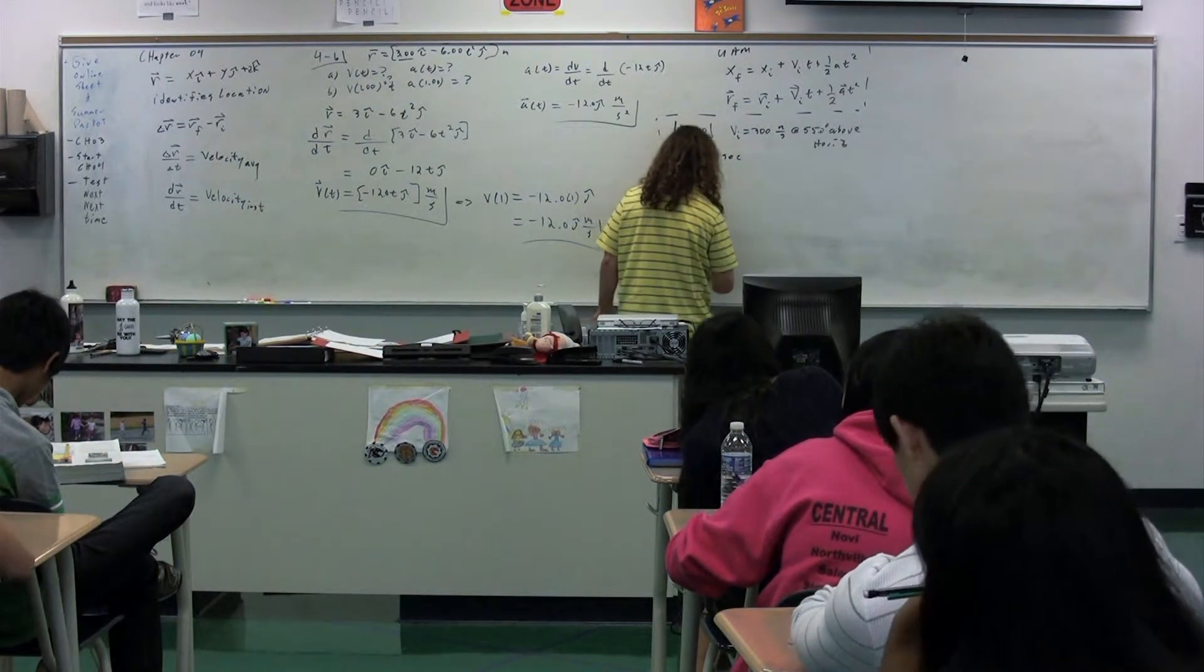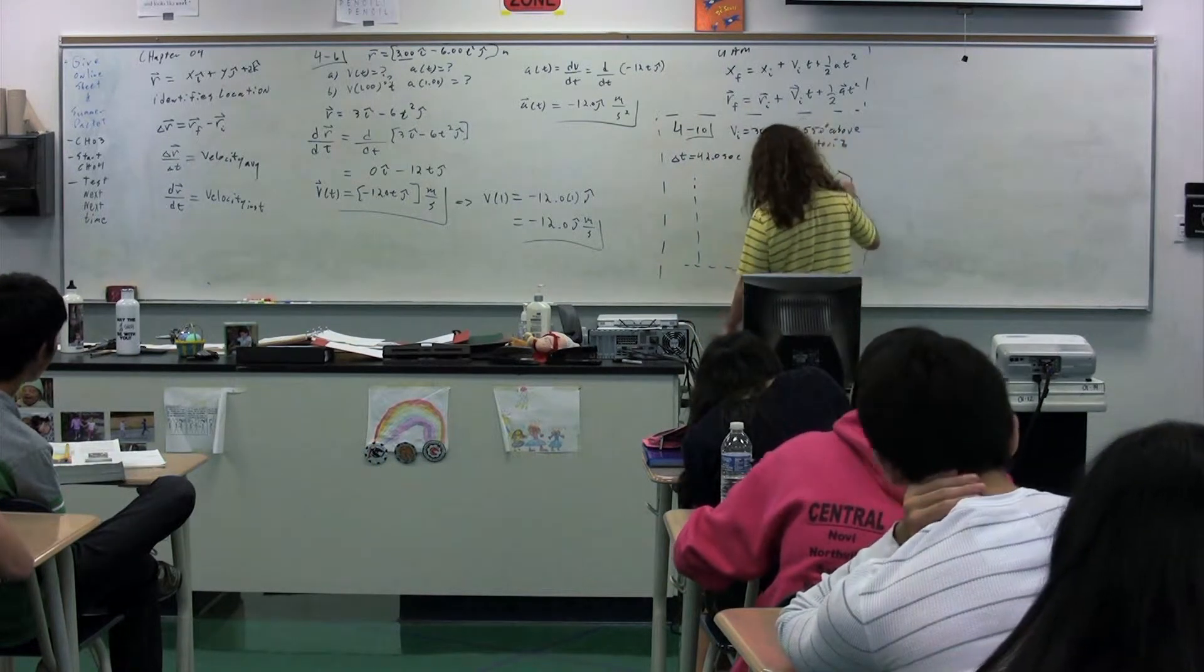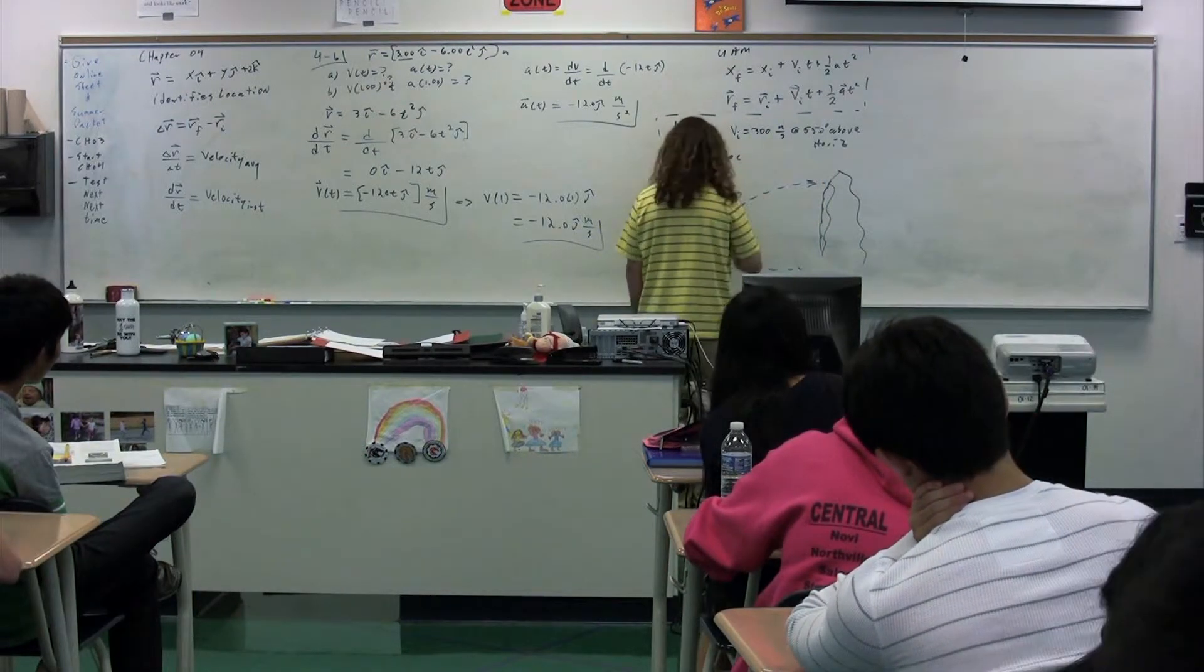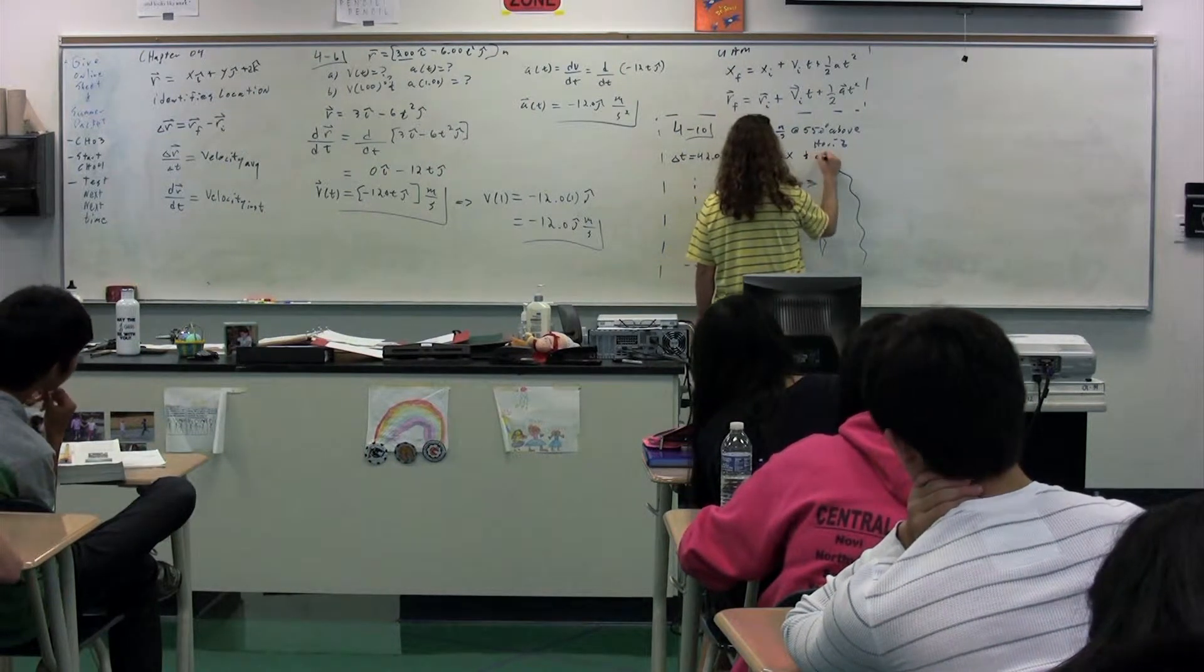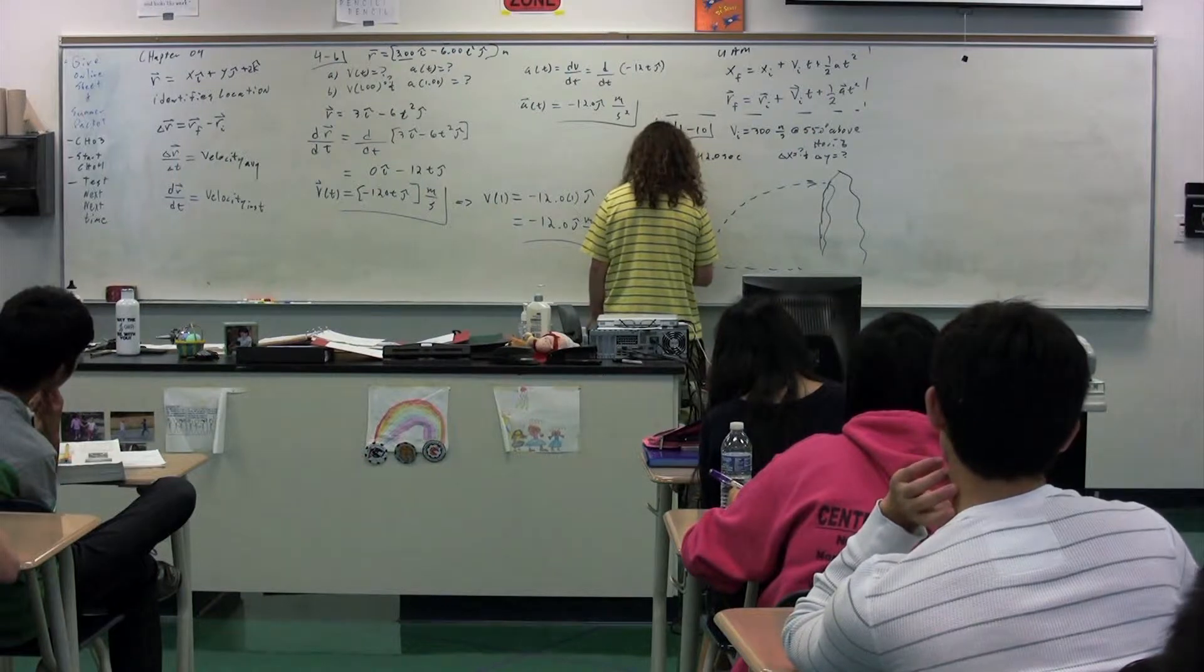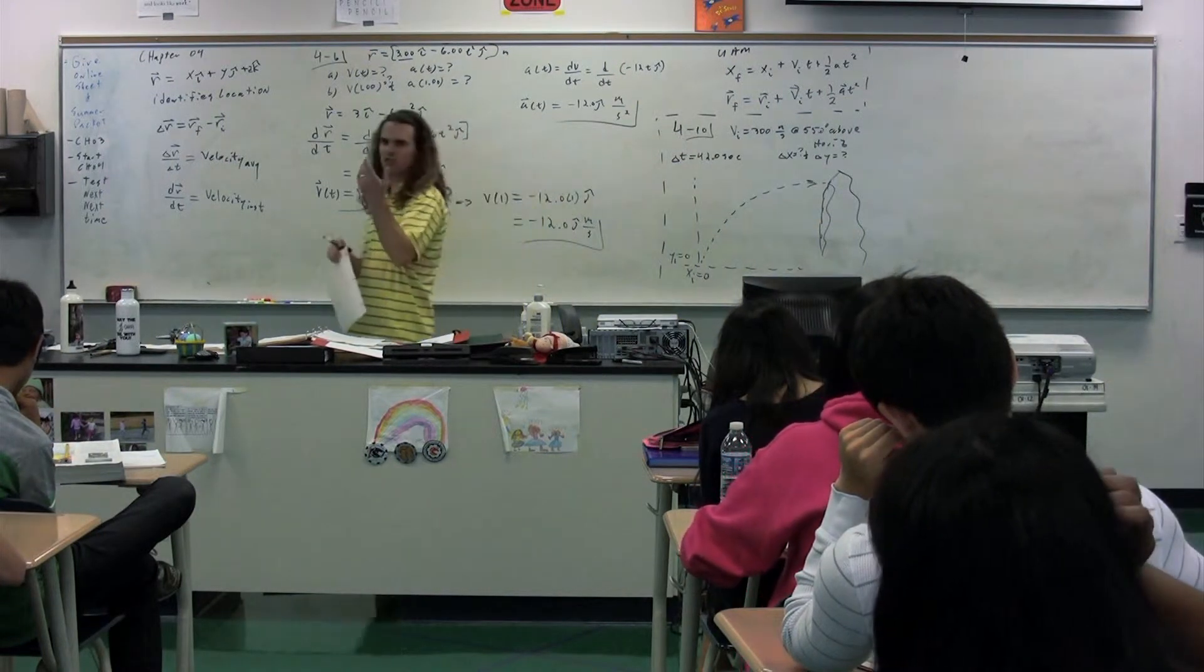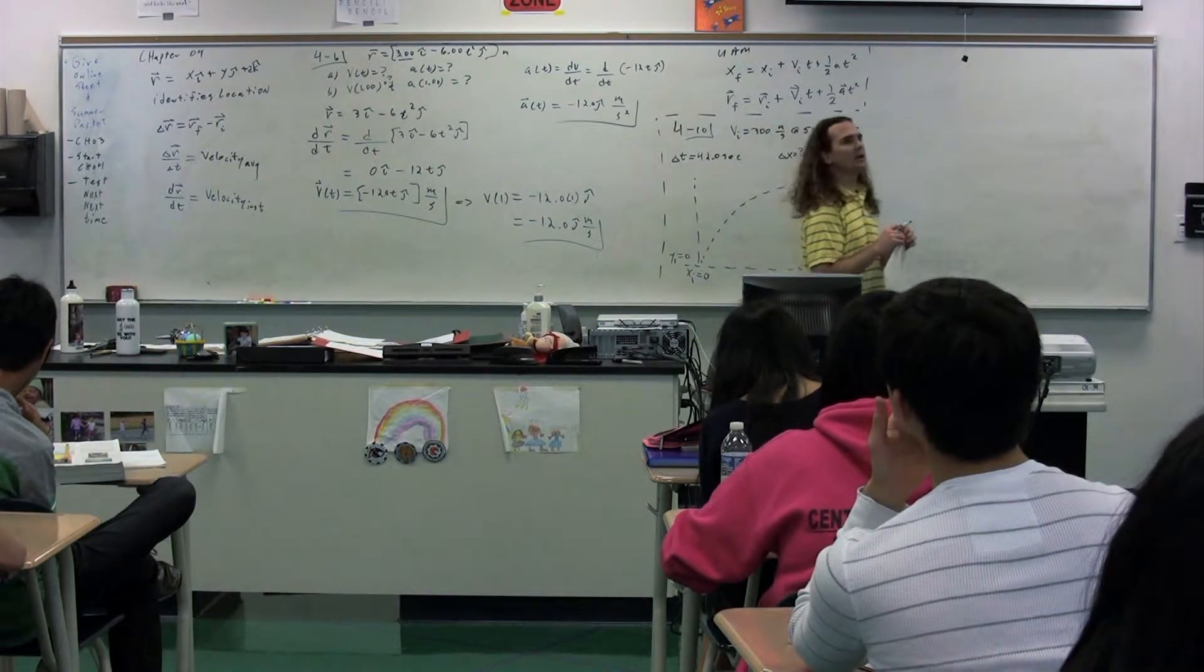So the shell is going to start here. We have some sort of mountain. We have a launch. It goes up and strikes the mountain somewhere over here. And we're looking for delta x and delta y equal question mark, assuming we'll have the start position initial equal to zero in both the x and y direction.